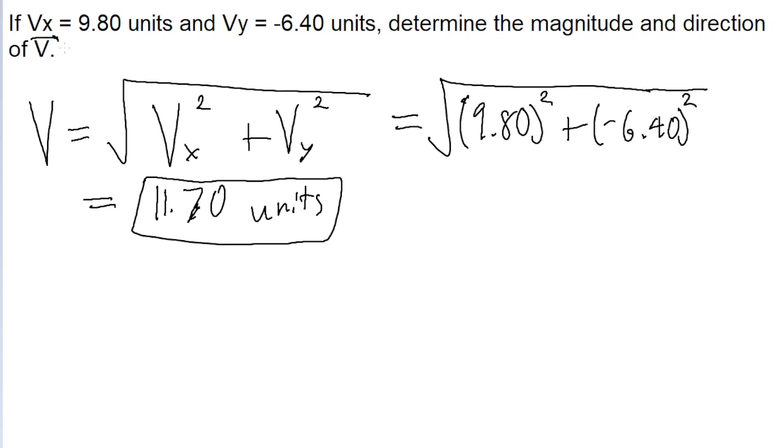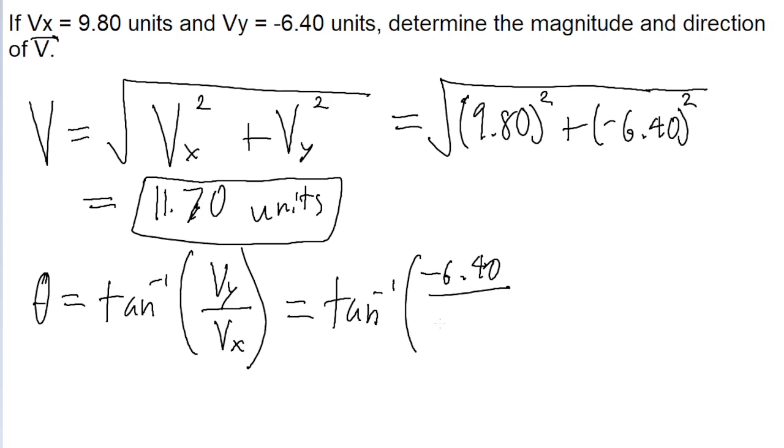But now we also want the direction of V. So the formula for the direction of a vector is, the angle is the inverse tangent of the y component divided by the x component. So for our purposes, it's the inverse tangent of the y component, which is negative 6.4 divided by 9.8. And this gives us an answer of negative 33.1 degrees.